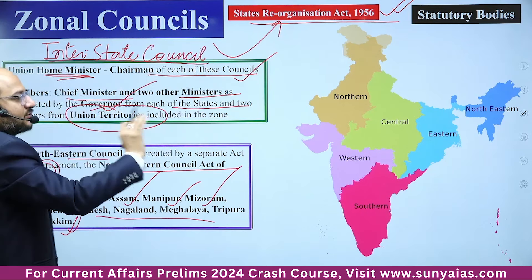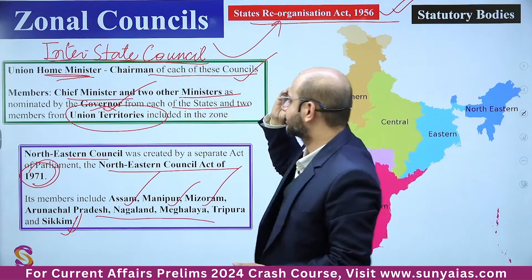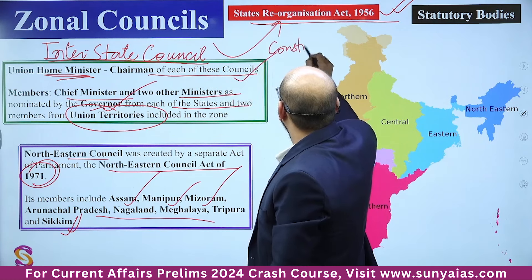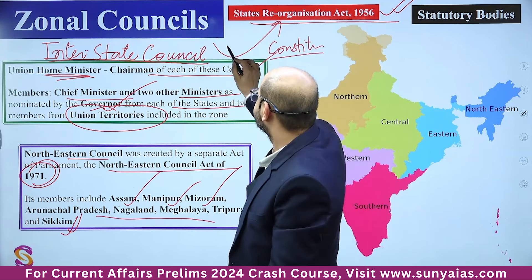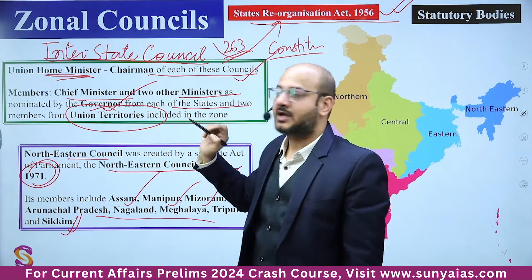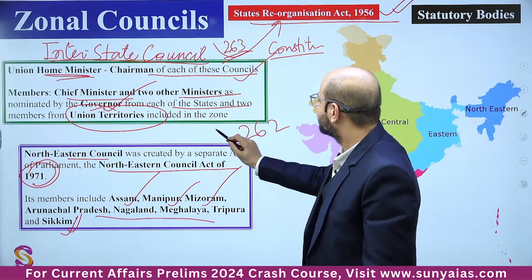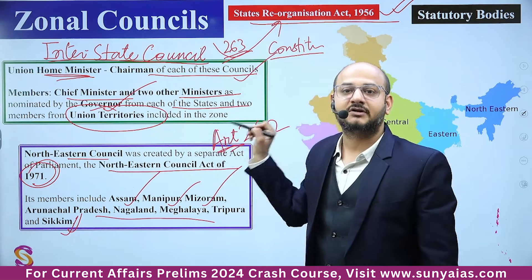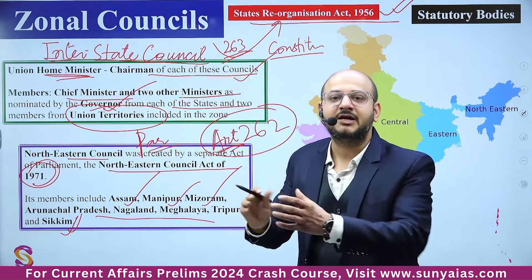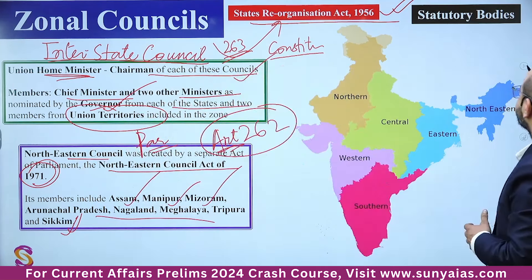The Northeastern Council was created under a separate act — the Northeastern Council Act 1971 — not the States Reorganisation Act 1956. Its members include Assam, Manipur, Mizoram, Arunachal Pradesh, Nagaland, Meghalaya, Tripura, and Sikkim. The Interstate Council is a constitutional body under Article 263, appointed by the President. Article 262 deals with interstate water disputes, which fall in Parliament's domain — Parliament may form a tribunal for water disputes.